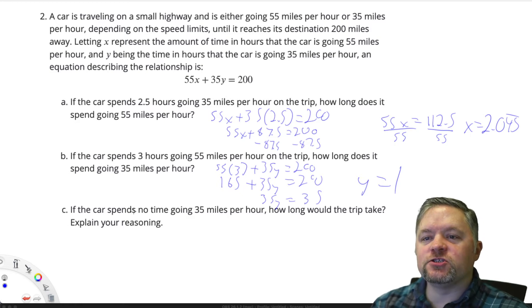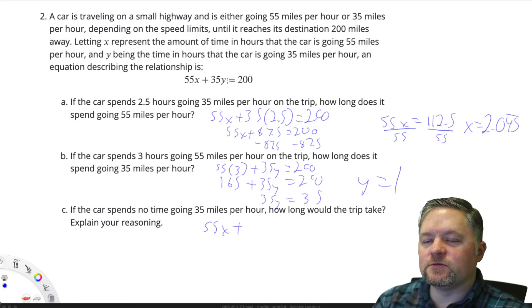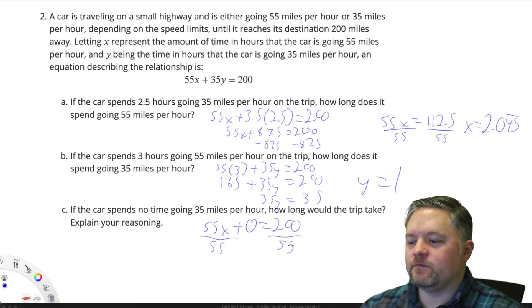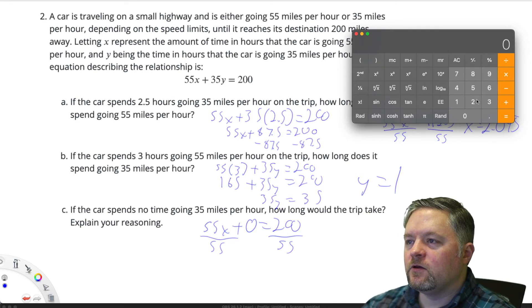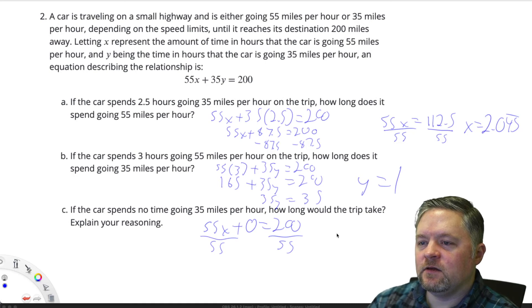If the car spends no time going 35 miles per hour, how long would the trip take? Well, 55x plus 35 times y, but if we spend 0 hours, 35 times 0 is just 0. How long will it take? Divide each side by 55.